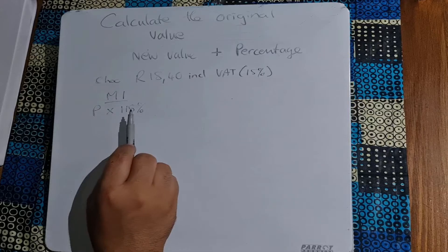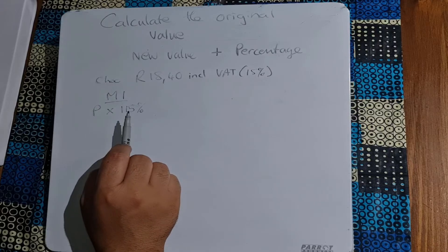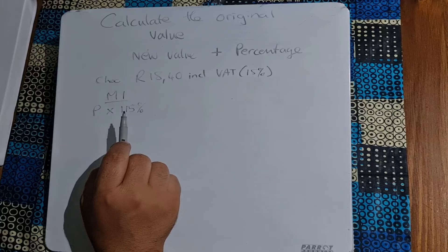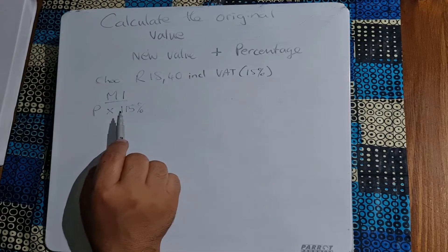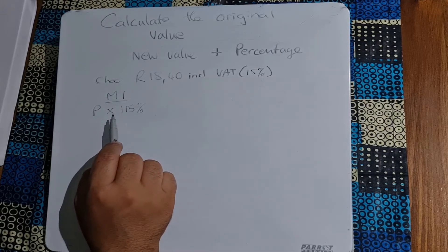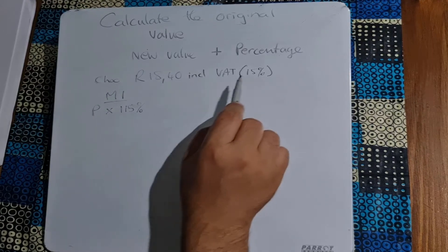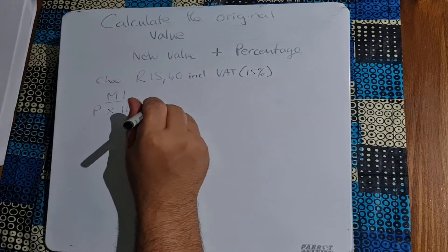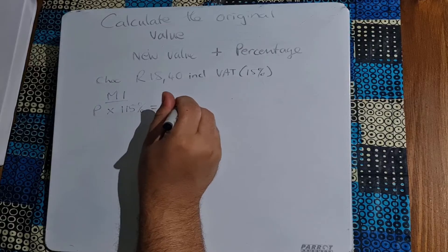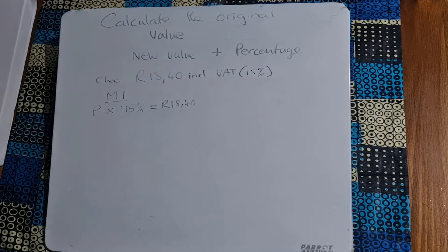So why 115%? Well it's simple. The 100 of the 115% would represent the original amount and the 15 represents the VAT, so together that would make my R18.40.